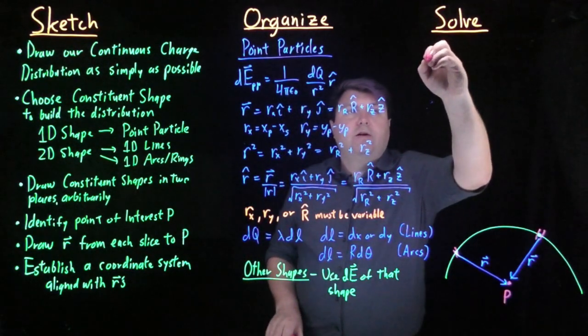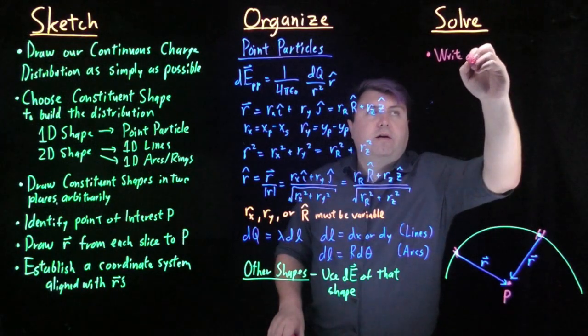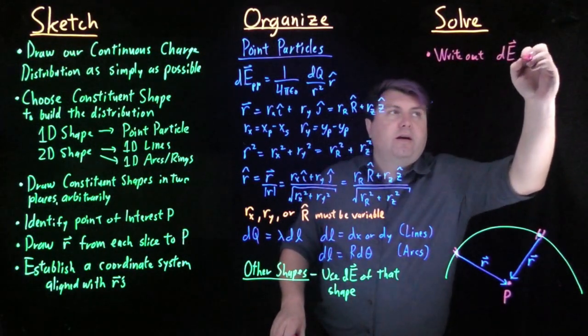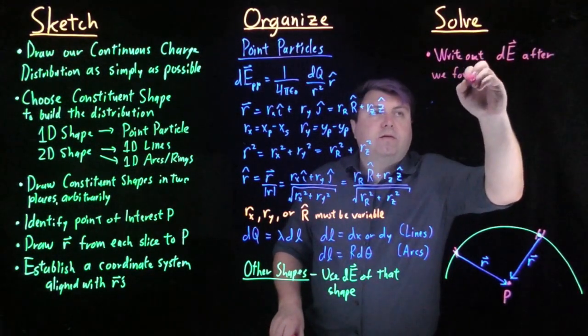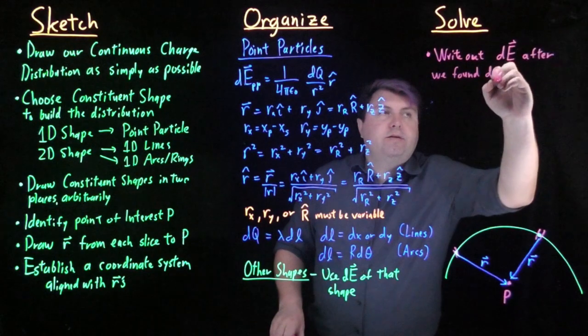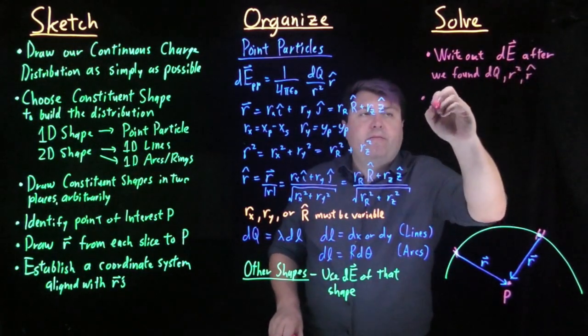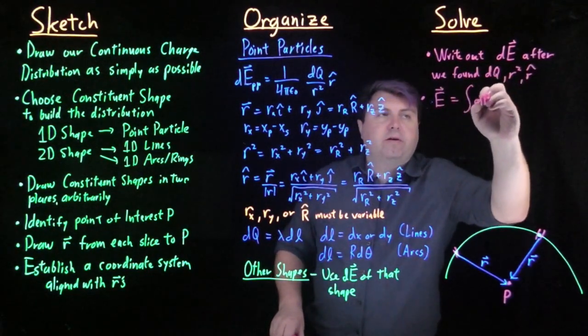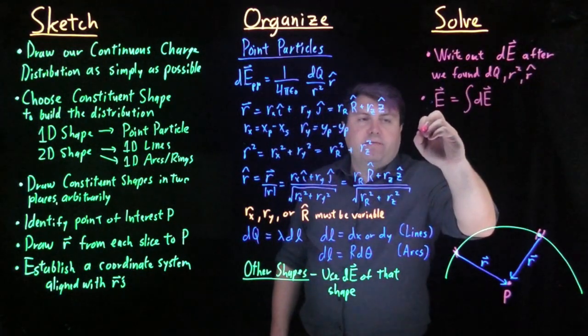Once we solve, we want to write out the dE after we found dq, r squared, and r hat. And then we have that idea that our electric field is going to be the integral of all of our little dE's, so we need to find the bounds.